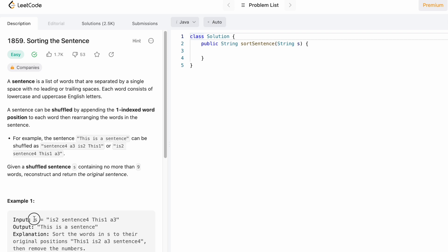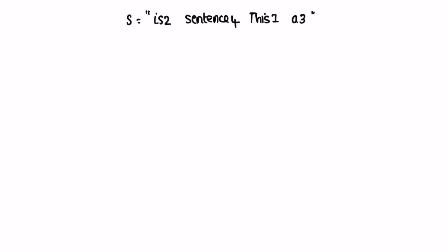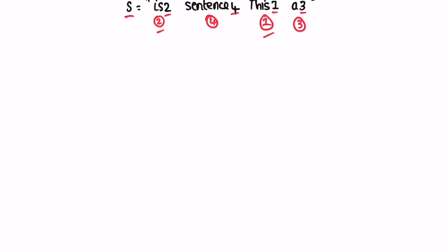Let's take a look at the example to see how this question can be solved. The input string contains alphanumeric characters where the numeric digit at the end of each word represents its position in the sentence. So 'is2' is the second word, 'sentence4' is the fourth word, 'this1' is the first word, and 'array3' is the third word. After rearranging, the sentence reads in the correct order.